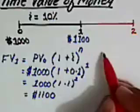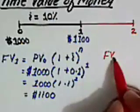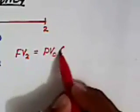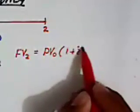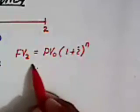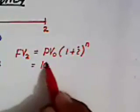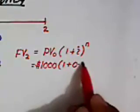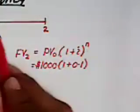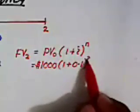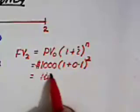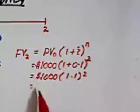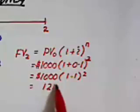So in that case, future value at the end of the second year would be equal to present value at time zero multiplied by one plus annual compound interest rate raised to the power n. Present value is one thousand dollars, multiplied by one plus ten percent, that is 0.1, raised to the power two. So this is one thousand multiplied by 1.1 raised to the power two, which is equal to one thousand two hundred and ten dollars.